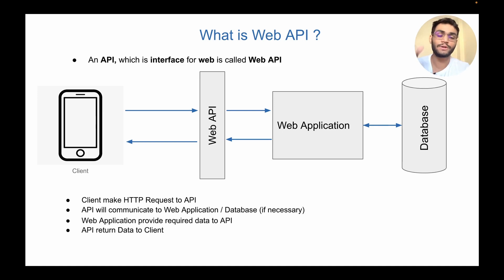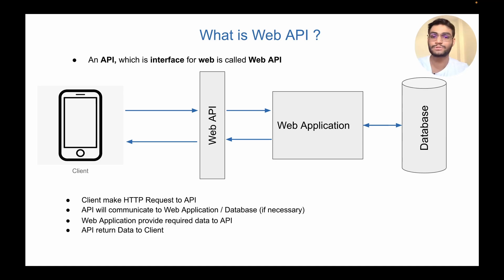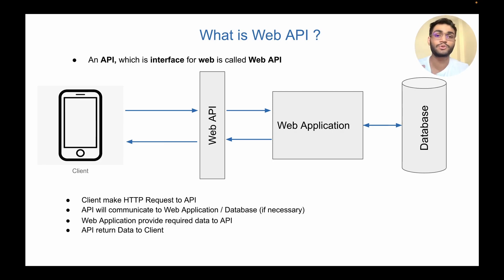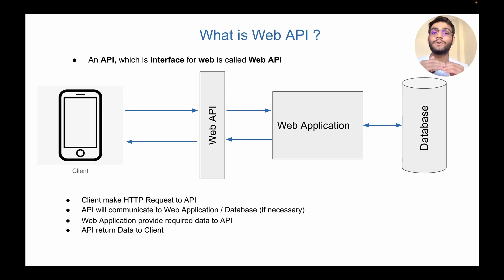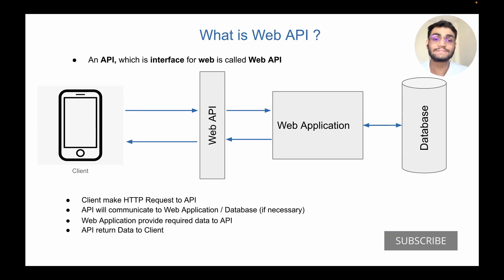I hope you have understood what is an API and what is a web API. If you have any queries or doubts, you can post in the comments. Now we understood the theory of the API and how it works, but there are some conventions that we use in an API, known as REST conventions, REST API, or RESTful API. We'll be learning that in our next video. If you liked the video and understood how this API works, subscribe to our channel and see you in the next video. Till then, take care.